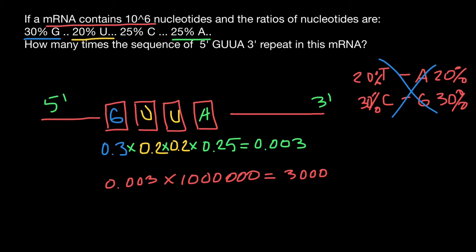This answer tells us that if messenger RNA is going to be one million bases long, we can expect that such sequence would be found 3,000 times. Or in other words, in 3,000 different places along the length of this messenger RNA. And this is all for today.